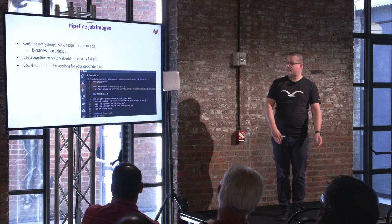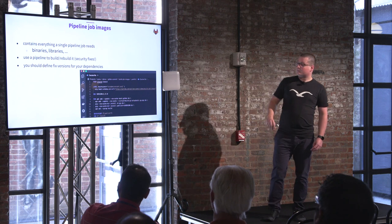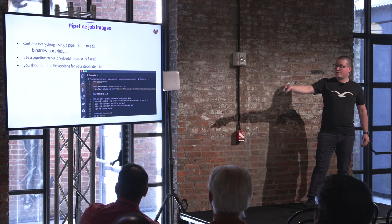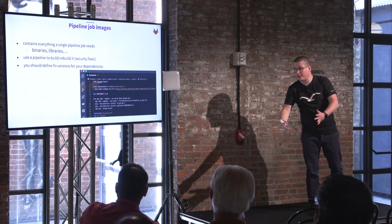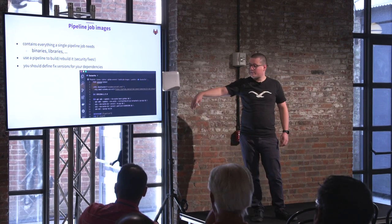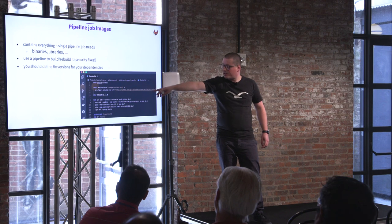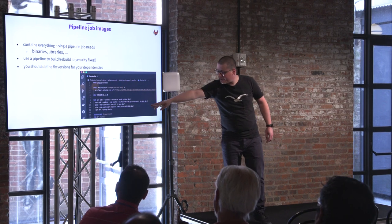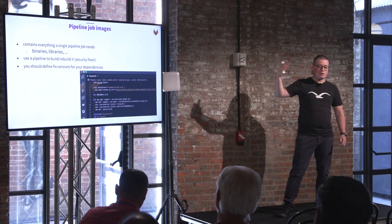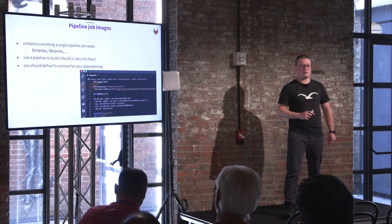Pipeline job images need to contain everything you need: binaries, libraries, CLIs — everything included. You should also build and rebuild your pipeline job images in an automated pipeline. Build a pipeline for your pipeline job image container and think about security fixes. Best practice is to define specific versions of your requirements. With this, you can define your version and rebuild the Docker image once a week or once a day, incorporating all related security fixes.